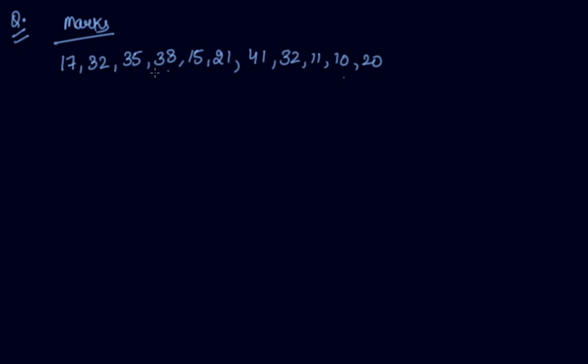Now this is the question. You are given the individual series and the number of students are 1 through 11. So your n is 11. First of all what you will do? You will arrange the series in ascending order. So I am arranging it in the ascending order.